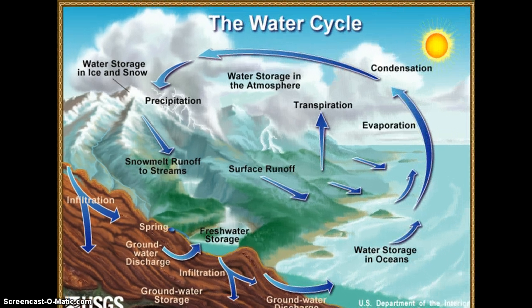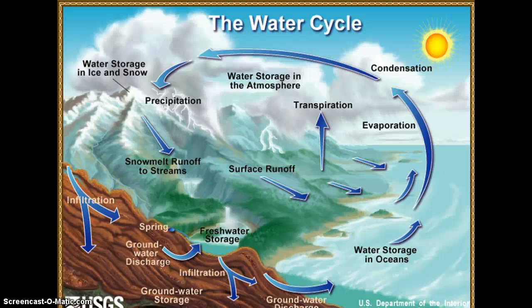First, let's take a quick review of the water cycle. As the U.S. Geological Survey, USGS 2014, notes, water is always in movement across planet Earth. The natural water cycle is also known as the hydrologic cycle, which describes this movement of water on, above, or below the surface of the Earth.